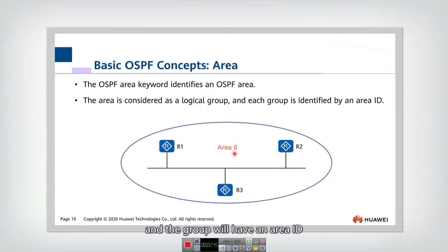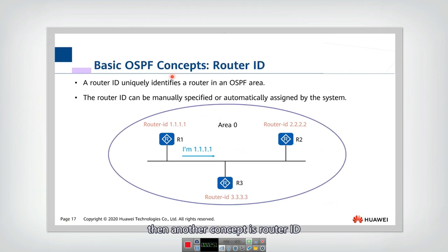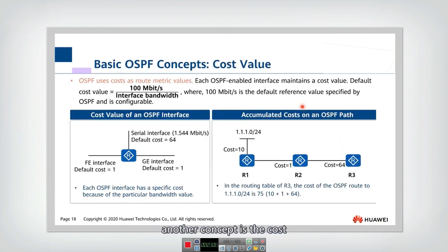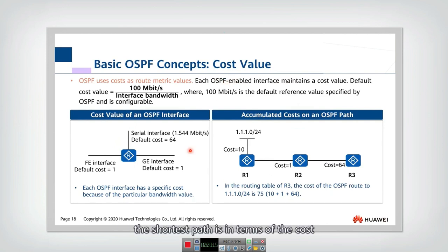The group will have an area ID. Another concept is router ID. Every router will have an ID, and typically this router ID equals its IP address. This router ID can be manually specified or automatically assigned. Another concept is cost, because we need to calculate the shortest path. The path with the minimum cost is called the shortest path.